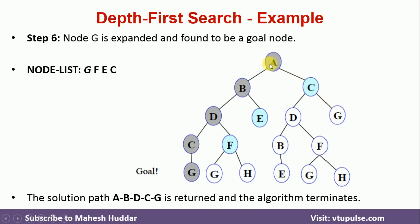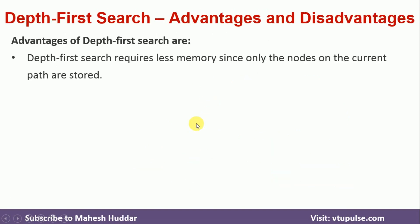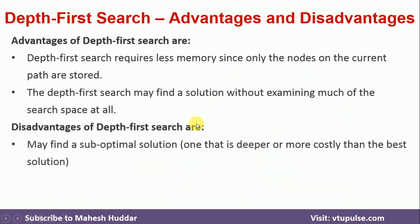Because DFS finds nodes only along the current path — going from A, then to the next, then the next — the advantage is it needs minimum memory, but the disadvantage is it gives a sub-optimal solution.